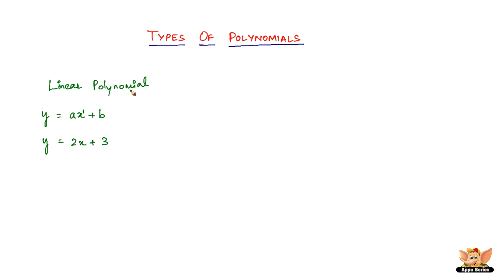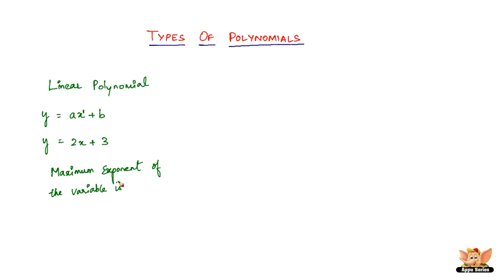A polynomial is an equation which has two or more terms. We've covered that in the previous video, so please check those for a more detailed explanation. For the linear polynomial, the key word to remember is maximum exponent, also called the degree of the equation. The degree means the maximum exponent of the variable. For a linear polynomial, the degree is one — the maximum exponent of the variable is one.